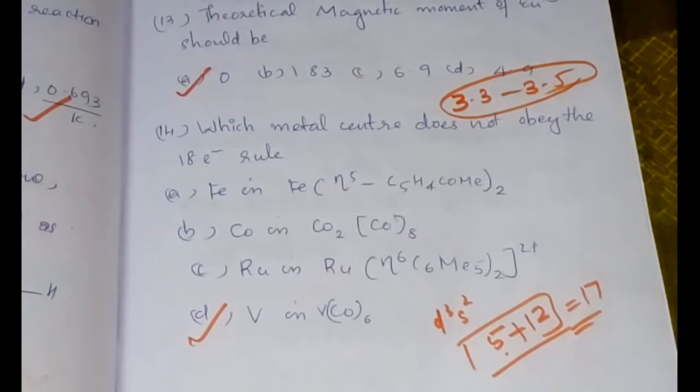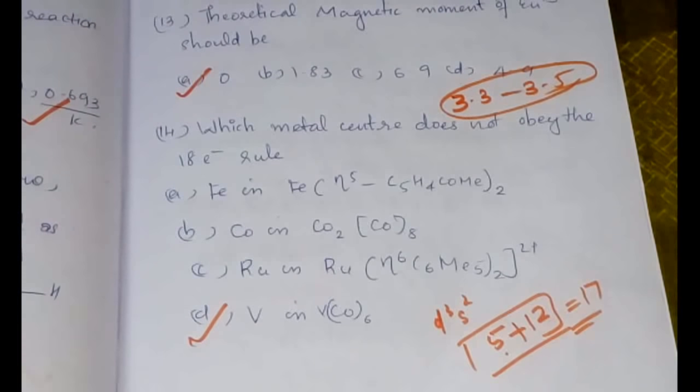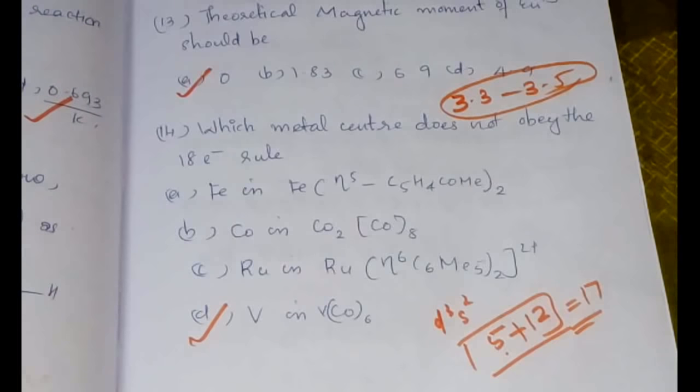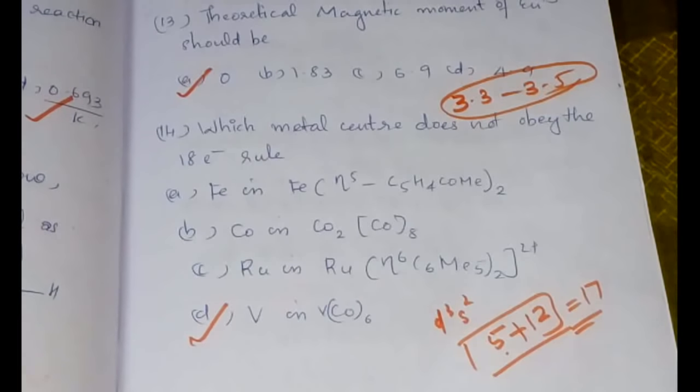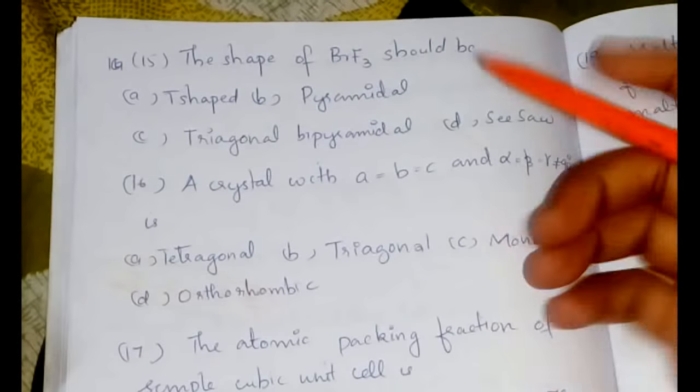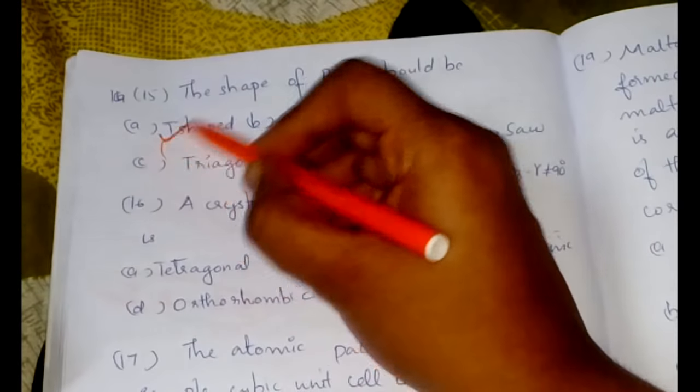If it had a minus, then that would not be the answer. So V in V(CO)6 is the answer—it is not obeying the 18-electron rule. Even if you are writing other entrance exams, whenever you have these kinds of questions, first try to do the simple one first. If luck is in your favor, the first one itself would be the easiest and would be the answer, and you could save a lot of time in your exam.